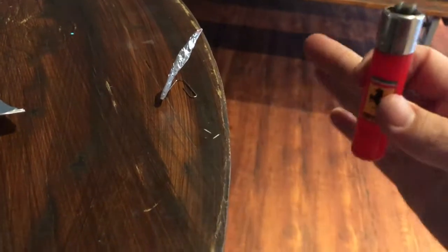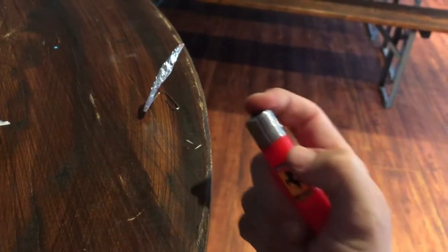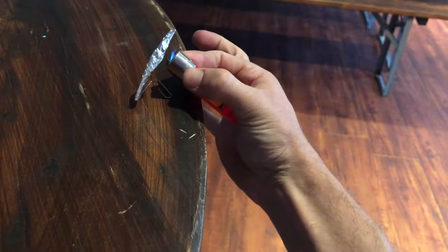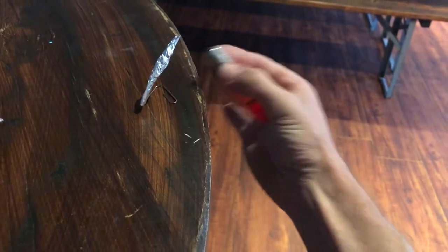Next we're going to take our lighter. If you have a longer lighter that's even better, it's safer. But for now this is all we have and we're going to put a flame directly underneath and hold it until it shoots.